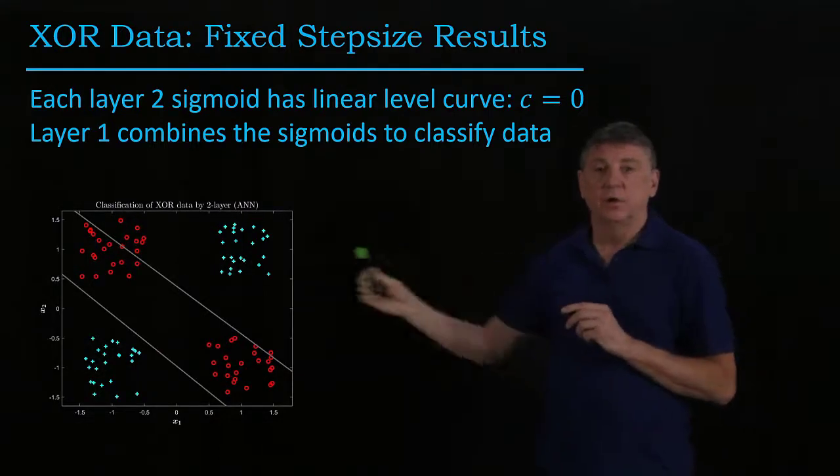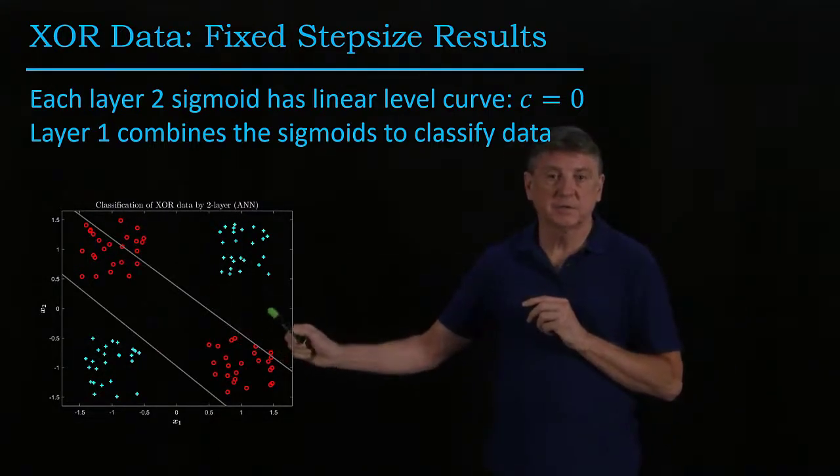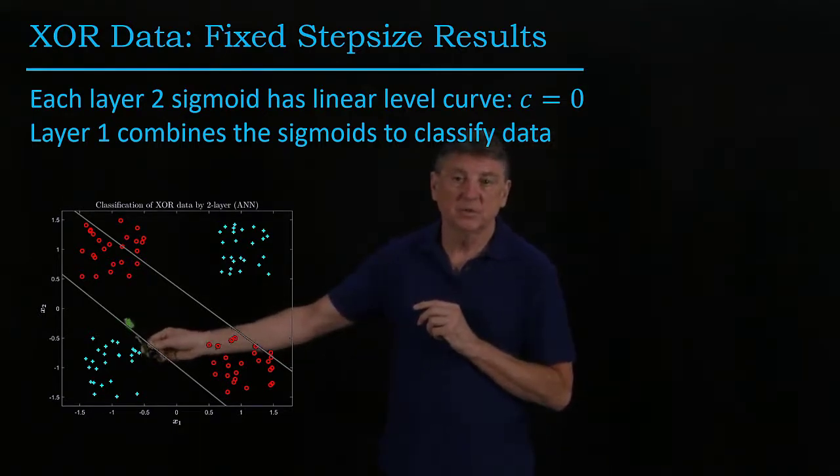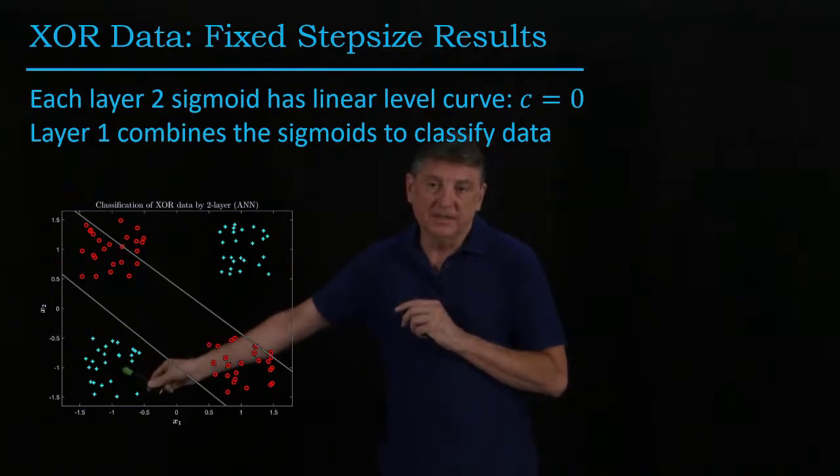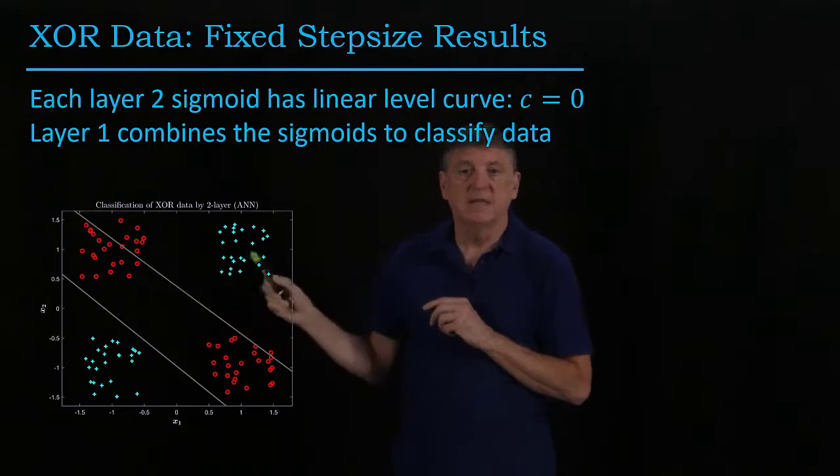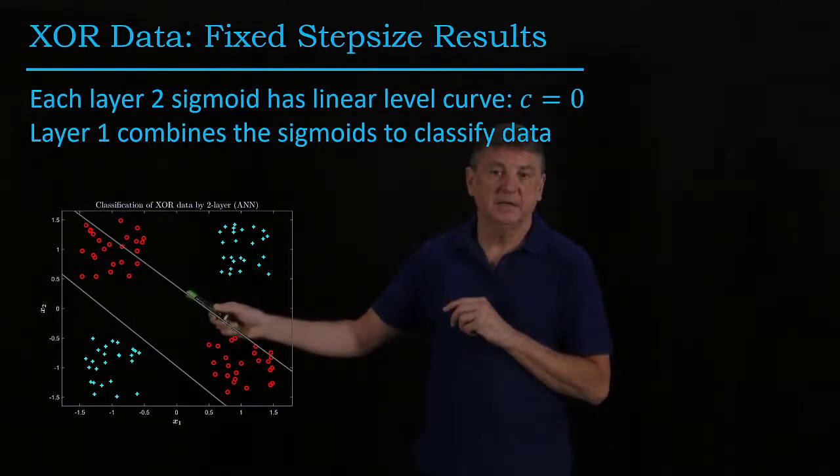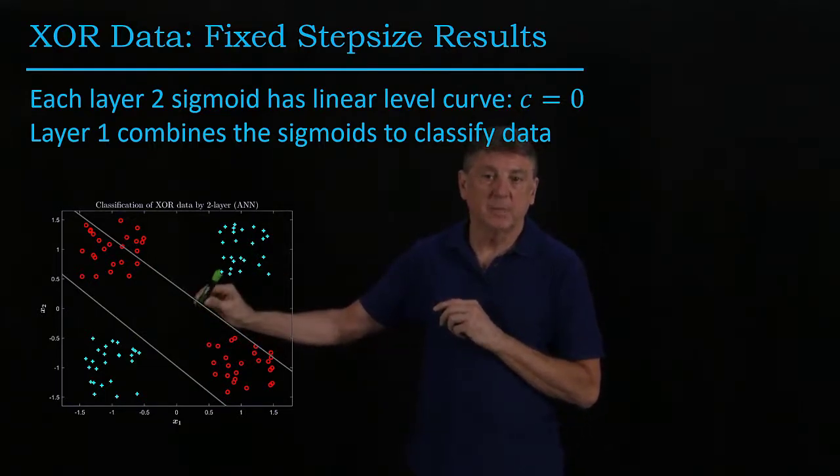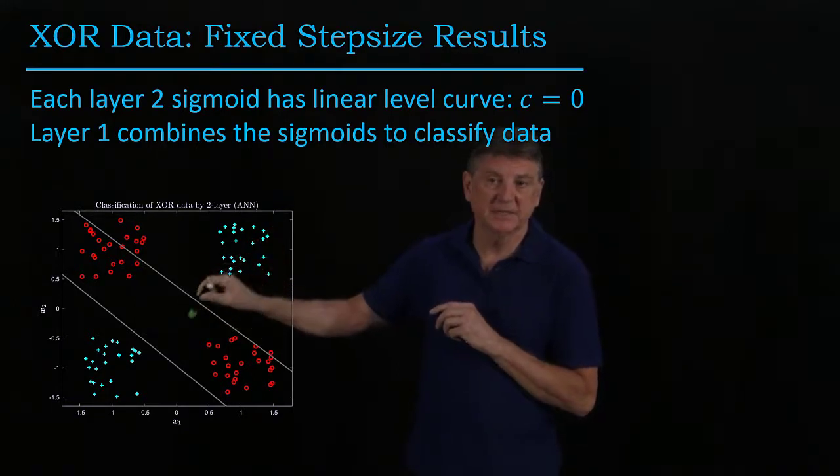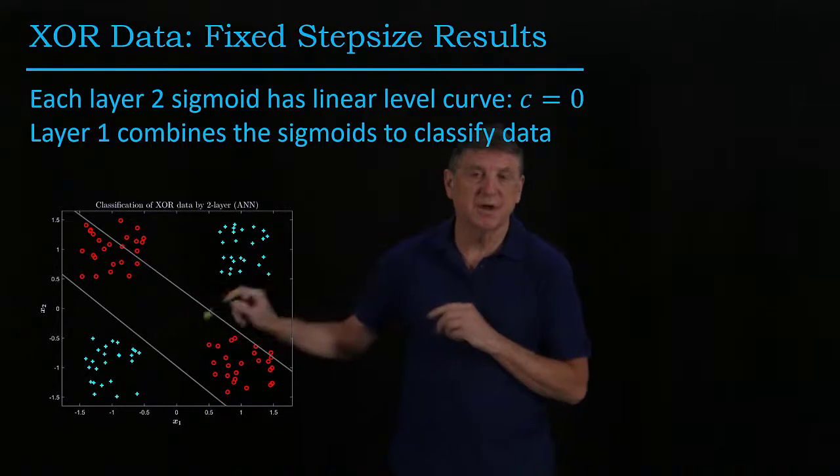The way that we can visualize the result of this computation is one of these hidden neurons has this hyperplane, and it's saying everything on this side is plus, and this side is minus. The other hidden neuron will be doing the opposite. It'll say everything that is on this side of its hyperplane is plus, on that side is minus.